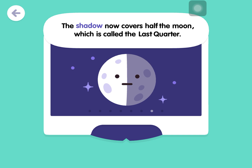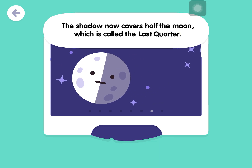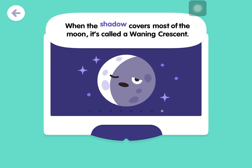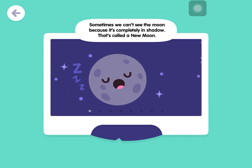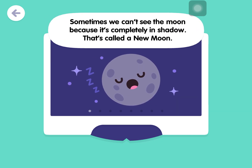The shadow now covers half the moon, which is called the last quarter. When the shadow covers most of the moon, it's called a waning crescent. Sometimes we can't see the moon because it's completely in shadow — that's called a new moon.